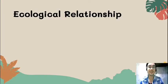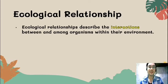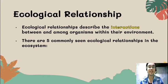Ecological communities consist of interacting or potentially interacting species in the same environment — this is what we call ecological relationships. Ecological relationships describe the interactions between and among biotic components, or the organisms within their environment. There are five commonly seen ecological relationships in the ecosystem.